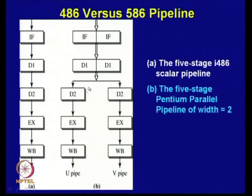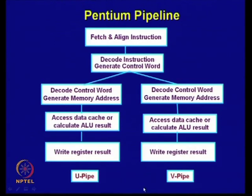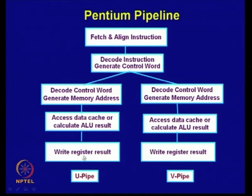Logically, it works as follows: fetch and align instructions, decode instruction to generate a control word, then in two separate pipes decode the control word and generate memory access. The same operations are repeated in both U-pipe and V-pipe: access data cache or calculate ALU result, then write register result (write back stage).